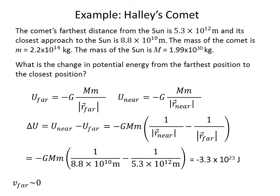V far, at that point, it's nearly zero. The comet is not moving very fast, so we'll assume it's zero. V near we can find by using one half m times v near squared is equal to this change in potential energy, or the minus this change in potential energy. And that gives us a v near of 54,000 meters per second. So it's moving quite fast.